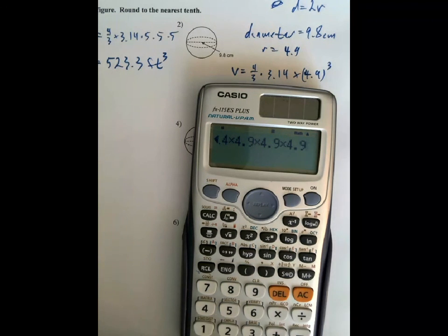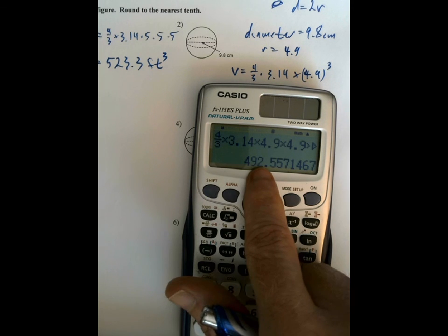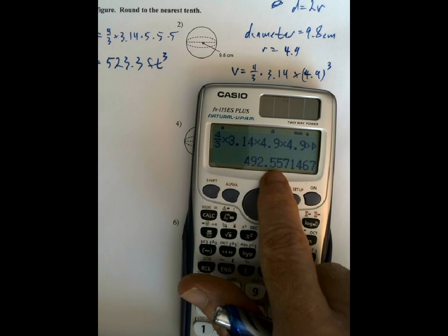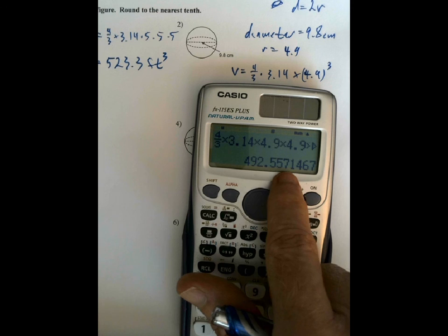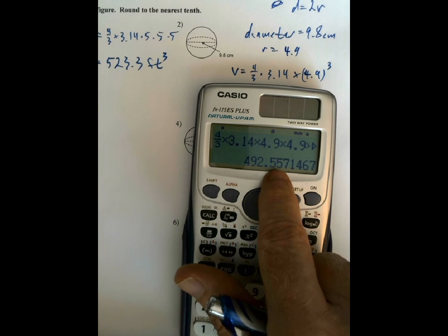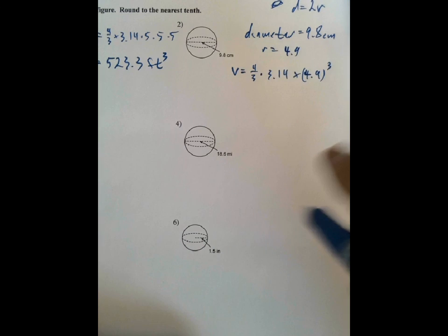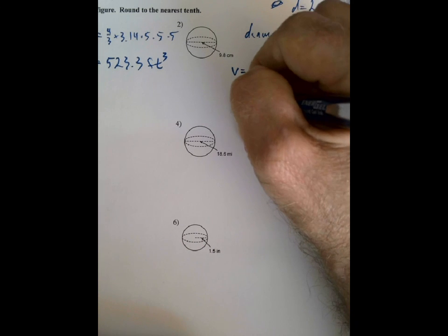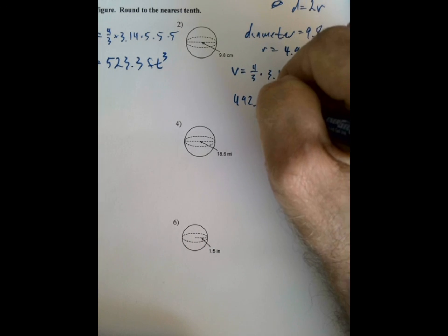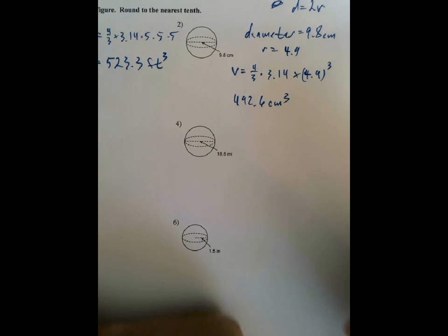So, on Mr. Calculator, 4 over 3 times 3.14 times 4.9 times 4.9. Now, if you're just careful about punching all the numbers in, boom, the answer comes out, and there it is, 492 point, and then rounded off to the tenth, rounded up to the tenths place, 492.6. So, 492.6, don't forget the units, cubic centimeters. And that's it.